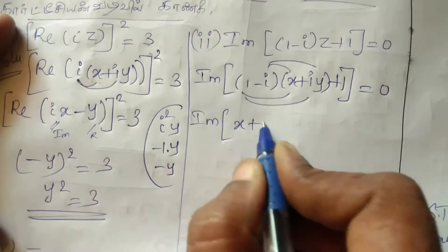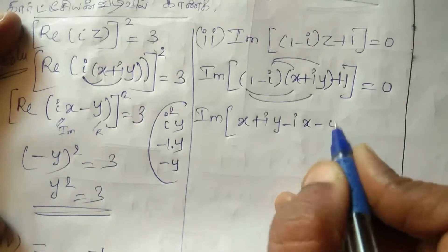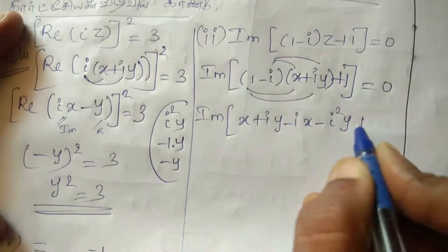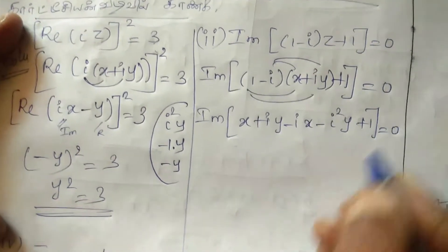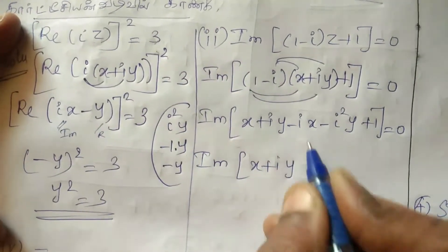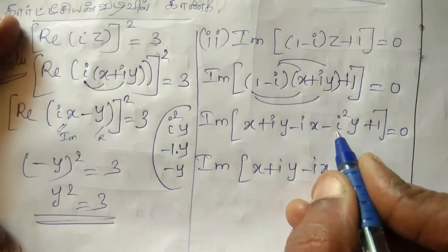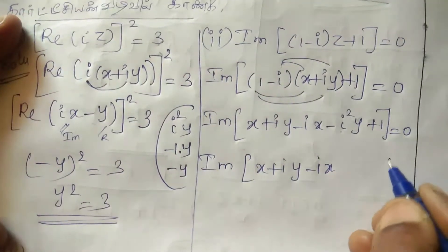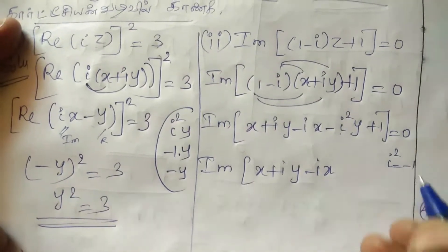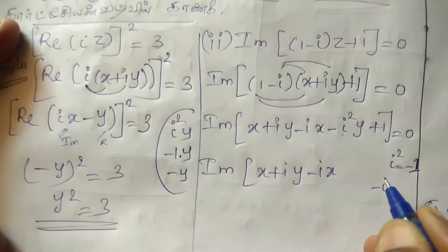So imaginary of X plus IY minus I into X is minus IX, minus I into IY is I squared Y plus 1. I squared is minus 1, so imaginary of X plus IY minus IX minus I squared.